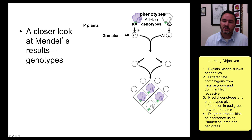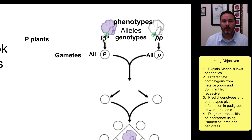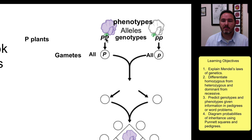If you start to use letters to represent the alleles, here we're going to use a big P for a purple allele. Each plant always has two alleles, so this true breeding purple plant has big P, big P.